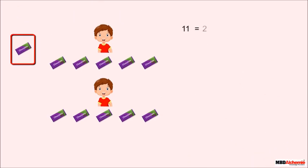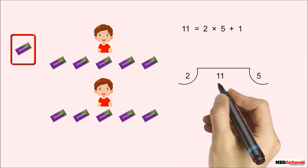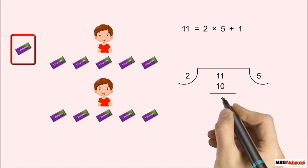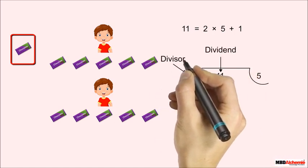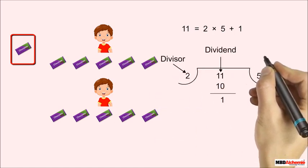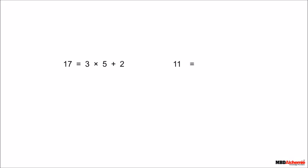Now think you have 11 chocolates and you want to give two chocolates to one student. How many students will get the chocolate? Five students will get the chocolate and one chocolate will be left out. We have two division statements, and if we look at these statements, this is just another way of writing 17, and this is another way of writing 11.